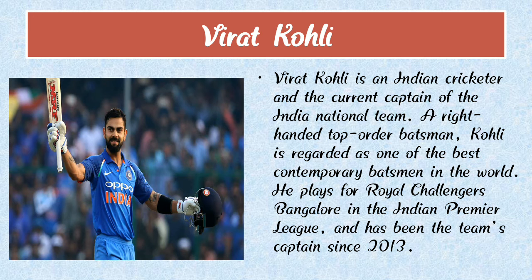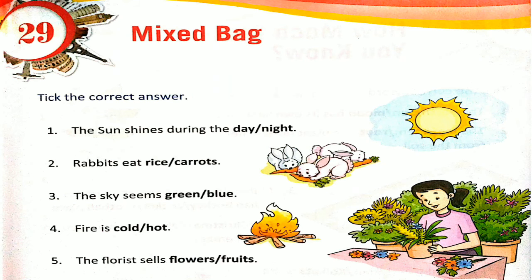Now we are going to learn the exercise. Unit number 29, our topic is mixed bag. Children, write with me. Number 1: the sun shines during the day or night? The sun shines during the day. Number 2: rabbits eat rice or carrot? Rabbits eat carrots.